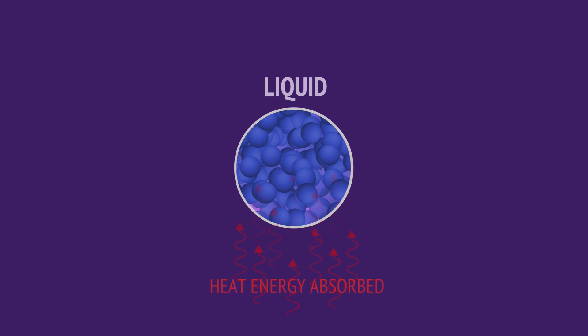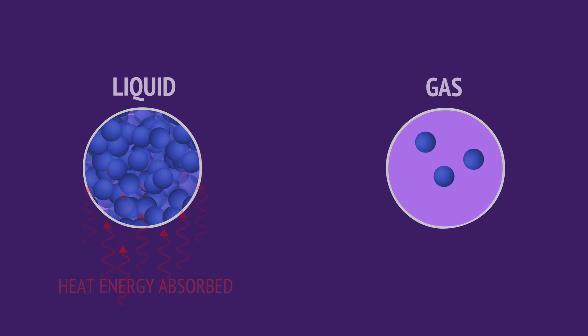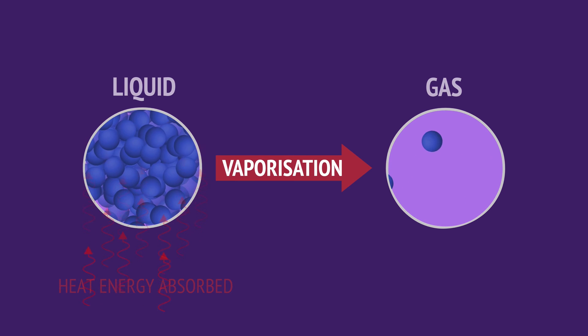As a liquid is heated, the particles slide around more and more quickly. Eventually, they'll have enough energy to completely break free of other particles and form a gas. We call this process vaporization.